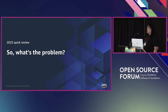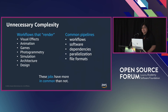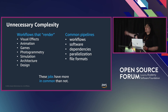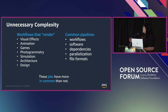Getting back to 2023 — if you were here last year, this may seem familiar. In two words: unnecessary complexity. On the left-hand side, you'll see a list of pipelines that are either current or emerging that have a rendering component or a graphics compute component. On the right-hand side, I've listed some pipeline similarities and commonalities often found in these pipelines — workflows, software stacks, dependencies, the way they parallelize, and even file formats. The key takeaway is these jobs have more in common than not.